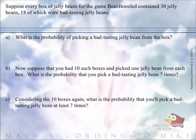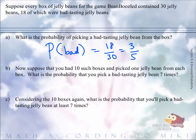Well, this is not a binomial, it's just a straight up probability, part over whole. So the probability of a bad bean, there are 18 bad beans out of 30 total, and that reduces down to three-fifths. The probability of picking a bad jelly bean is three-fifths.